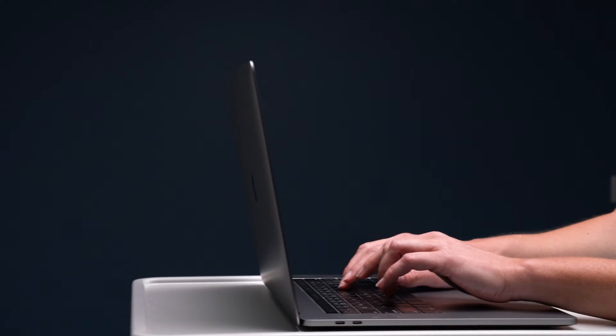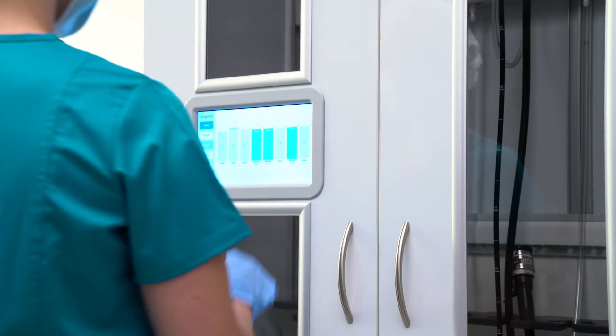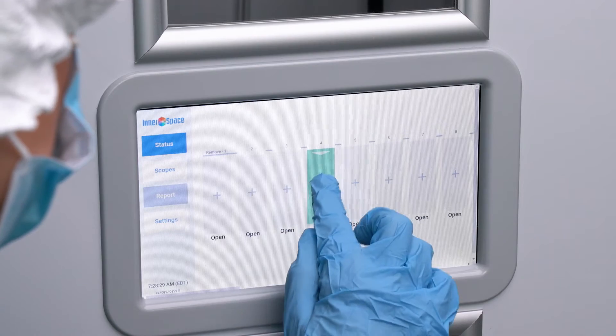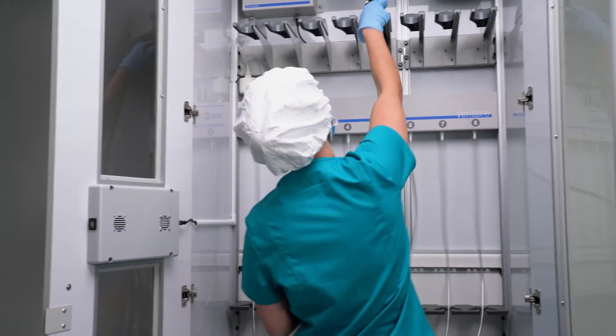You can also monitor the system remotely via the Innerspace Smart Solutions website. Either interface displays real-time information, including scope locations, drying, venting, and storage times, and channel availability.